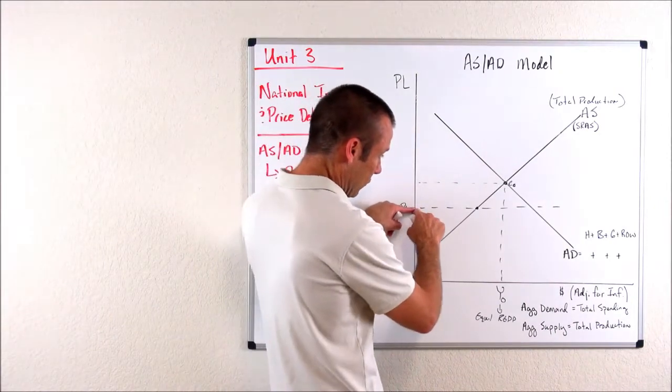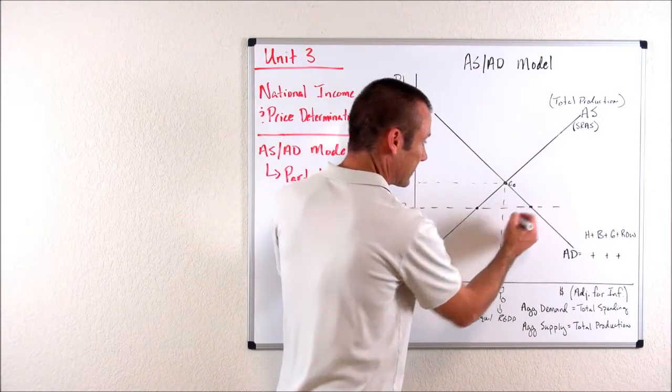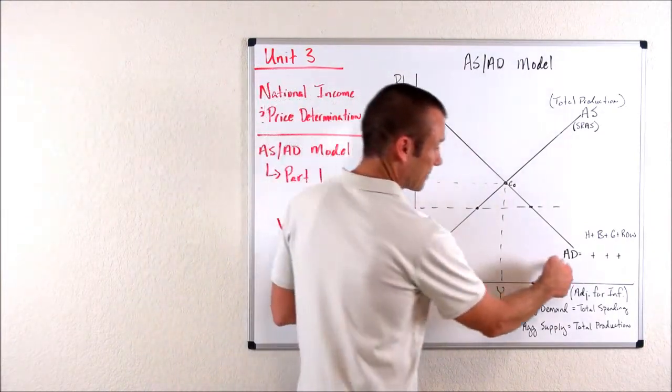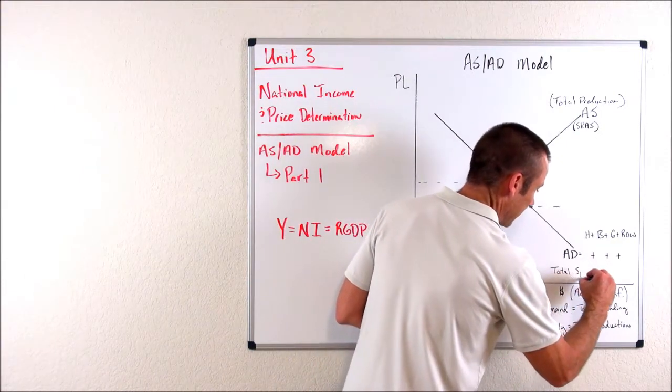Now, at this price level, this horizontal distance right there, that horizontal distance right there is aggregate demand. That aggregate demand is our total spending, our total spending.